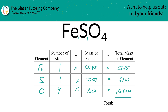Last but not least, we add this column together to find the total mass of the entire compound. When we add that together we get 151.92. Since we're solving for molar mass, the units are grams per mole — and now you know how to find the molar mass of iron(II) sulfate.